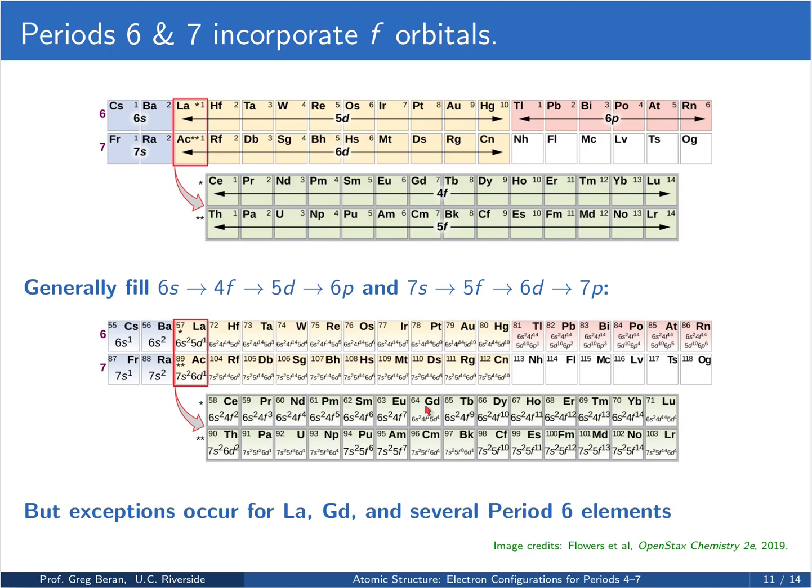And now, across the lanthanides, we generally start filling the f orbitals in a pretty systematic fashion. Except you'll notice, for example, in element 64, instead of having a 6s2 4f8 configuration, we maintain the half-filled shell and put one electron in the d orbital. And so on. Once we've filled the f's, in general though, we then start filling the d's and then eventually the p's.